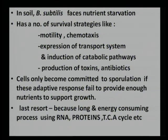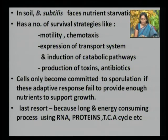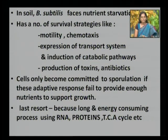In its natural environment, soil, Bacillus subtilis frequently faces nutrient starvation and adapts many survival strategies. It includes motility and chemotaxis for reaching nutrients. It also expresses transport systems, induces catabolic pathways, produces toxins, antibiotics, and degradative enzymes to suppress competition by killing neighboring prokaryotes and eukaryotic cells, thereby gaining access to nutrients. Cells only become committed to sporulation if these adaptive responses fail to provide enough nutrients.